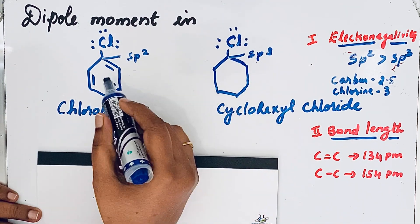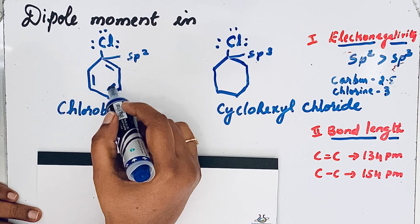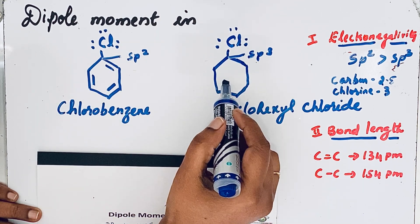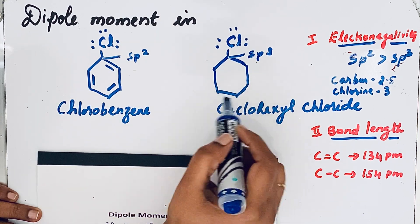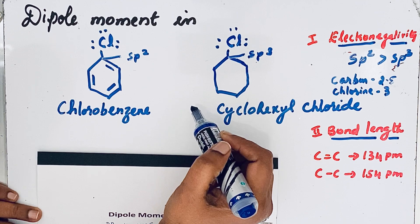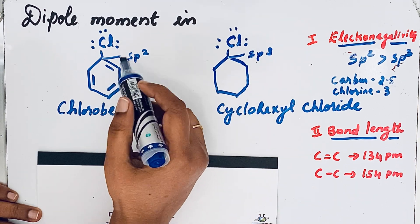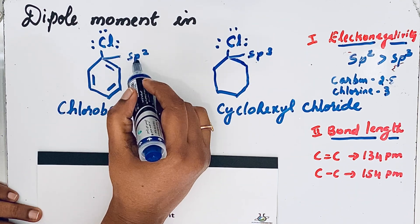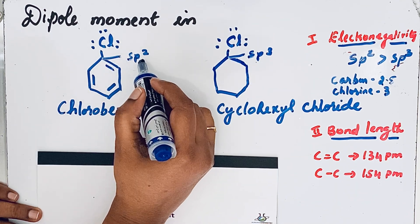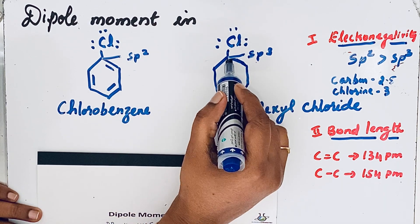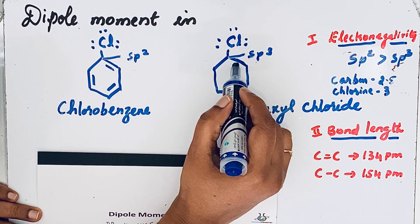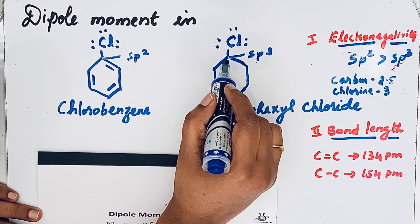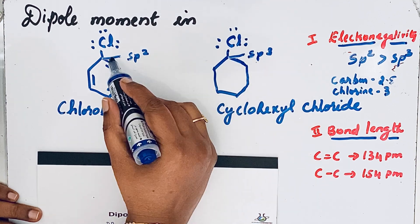In chlorobenzene we have double bonds, while cyclohexyl chloride has only single bonds. Due to this double bond character, the carbon in chlorobenzene becomes an sp2 carbon, whereas the carbon in cyclohexyl chloride is an sp3 carbon. Now let us compare the electronegativity of sp2 and sp3 carbon.